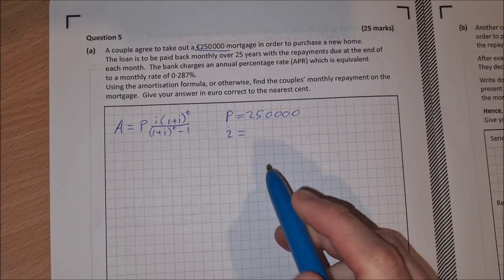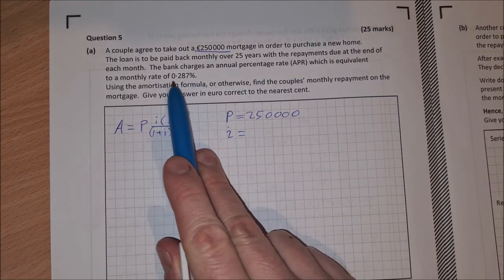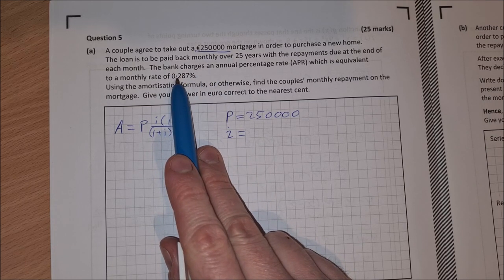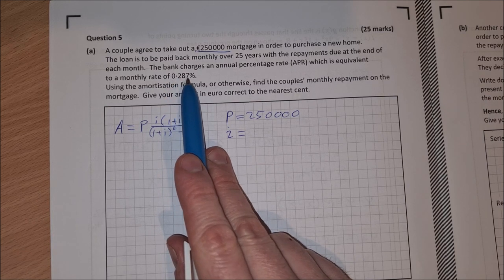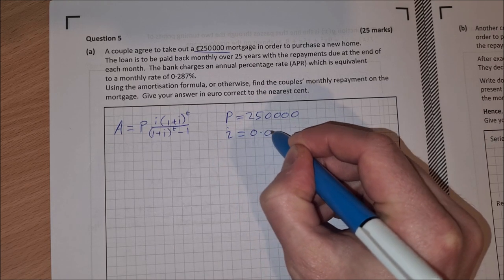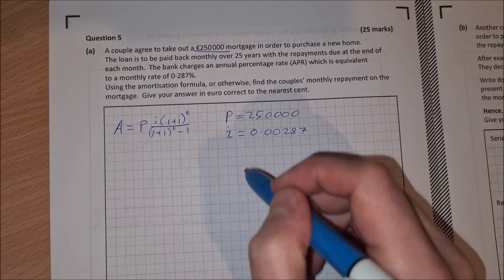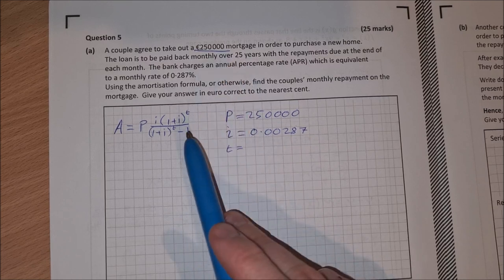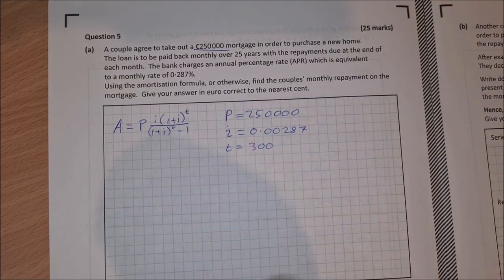I then is the interest rate. Now the interest rate is already given to us as a monthly rate, so we don't need to change from annual to monthly, but we do need to give it as a decimal. So 0.287% as a decimal is 0.00287. And then t, which is our number of time periods, it's 25 years times 12 months is 300 months. So t is 300.